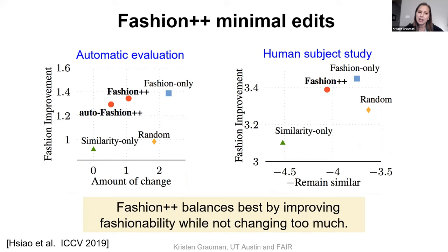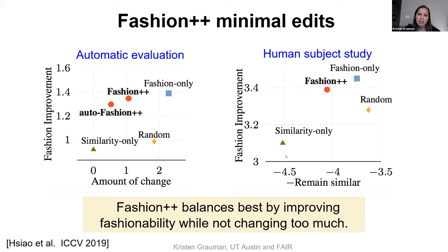To quantify how good the results are, we have two plots. On the left, we have ground truth about the original fashionable outfit we're trying to recover and measure closeness to that. On the right, we asked humans to judge fashionability quality as well as the amount of change the algorithms are introducing. You want to be in the top left of both plots — lots of fashionability improvement without totally redoing the outfit — and Fashion++ shows a good balance of these two factors.